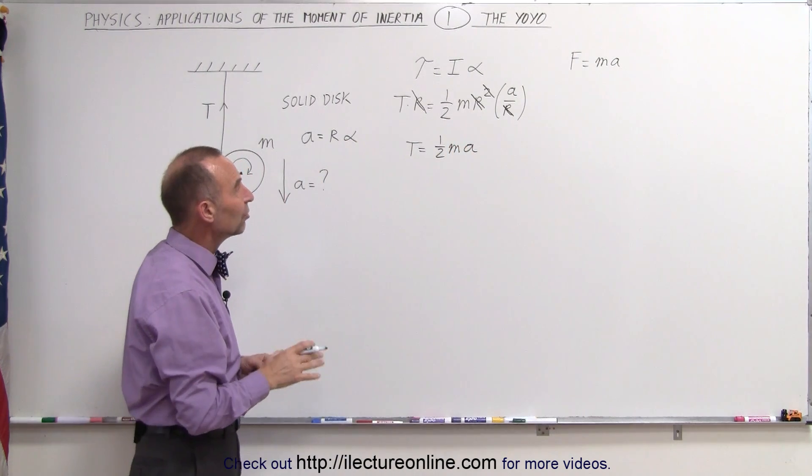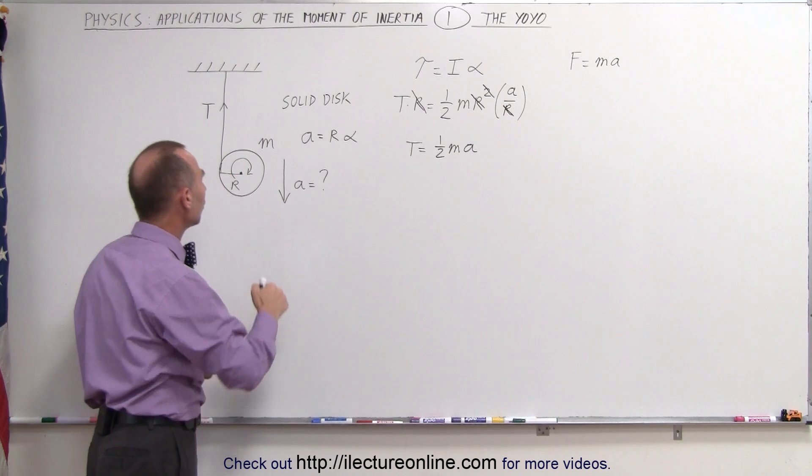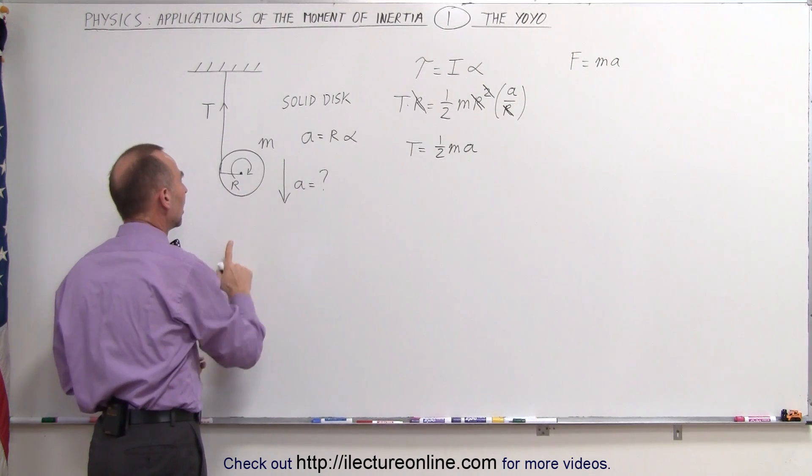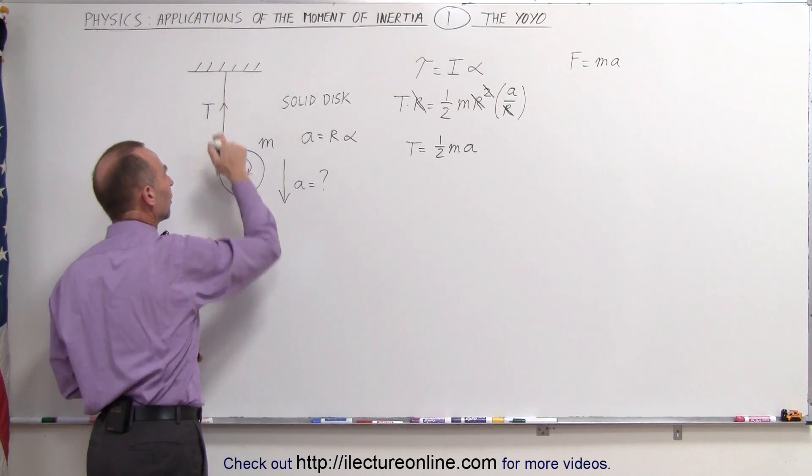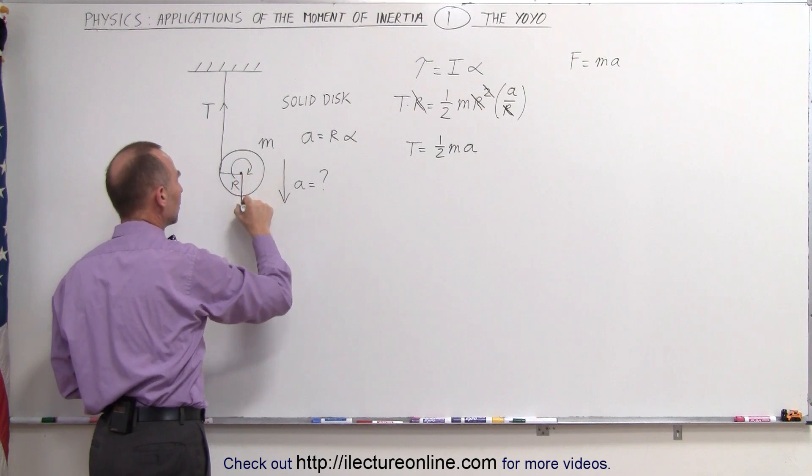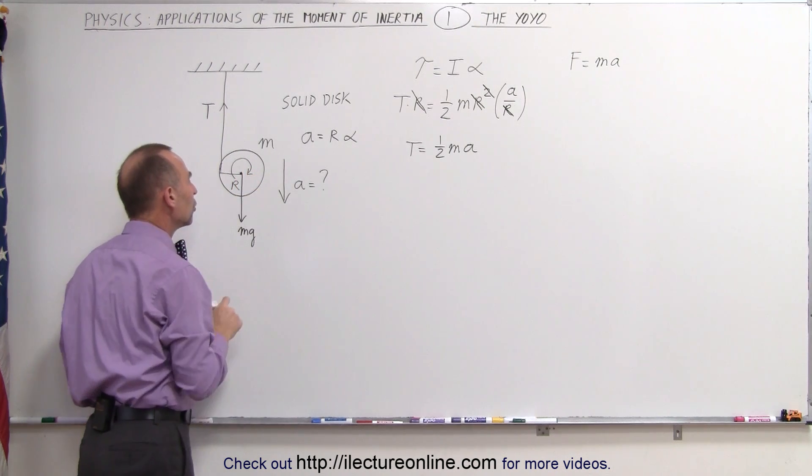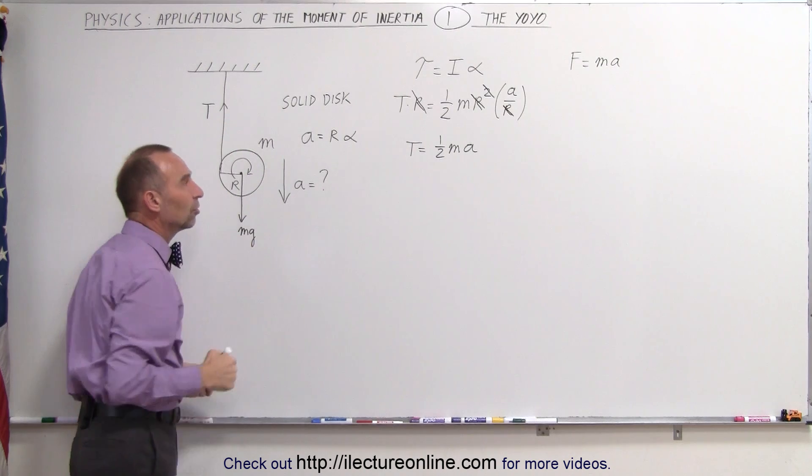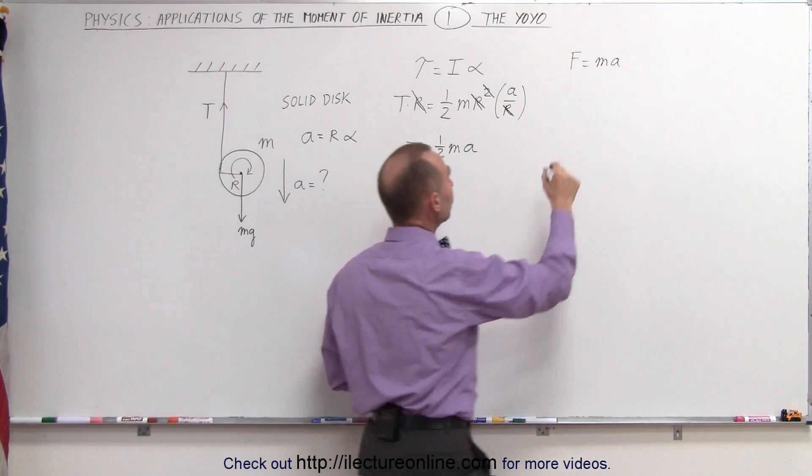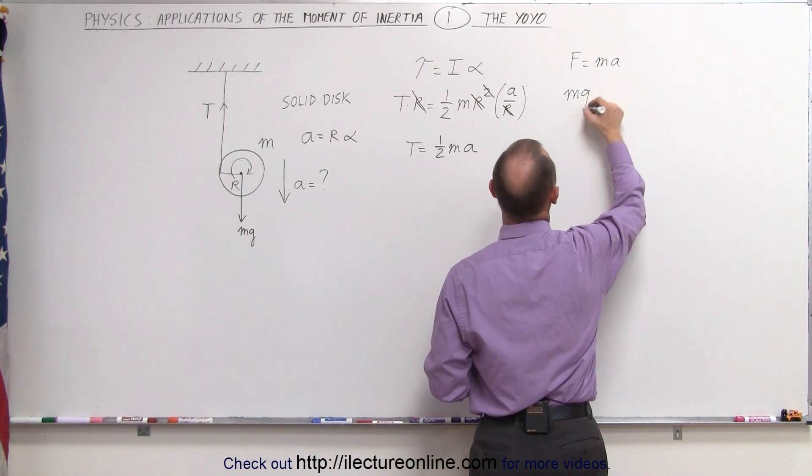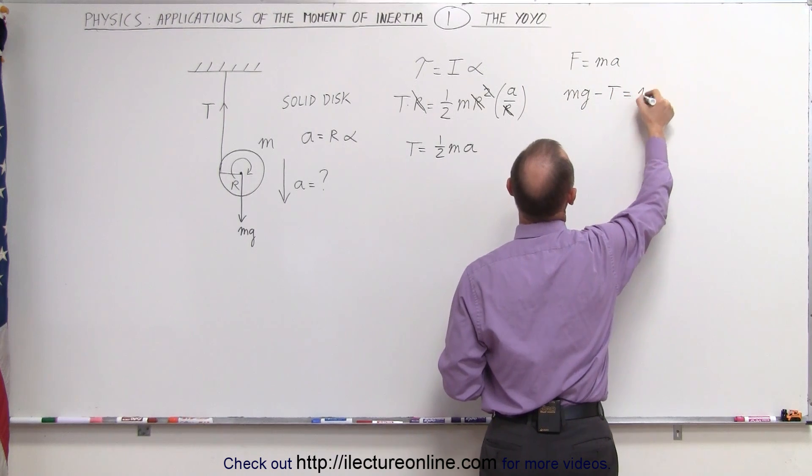Now working with the second equation F equals MA. We have all the forces aiding the acceleration and all the forces opposing the acceleration. The aiding the acceleration would be the force M times G or the weight of the yo-yo. Opposing would be the tension in the string. So we can write that Mg minus the tension in the string equals MA.